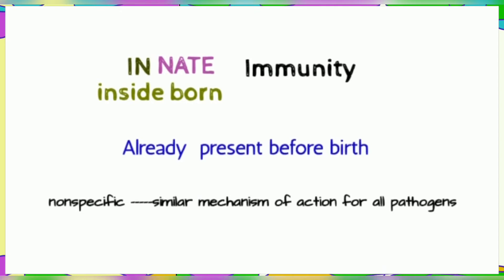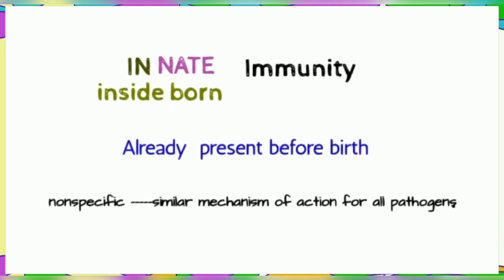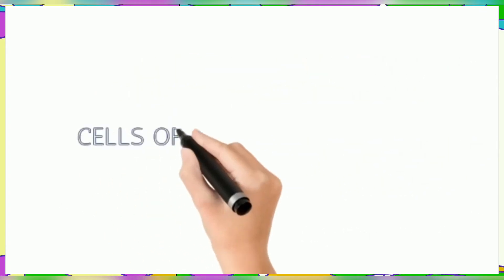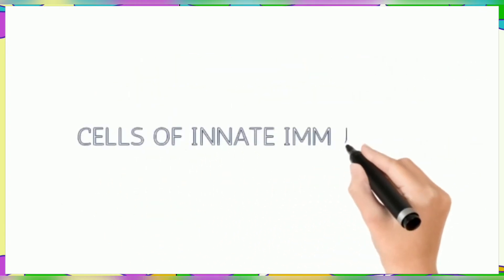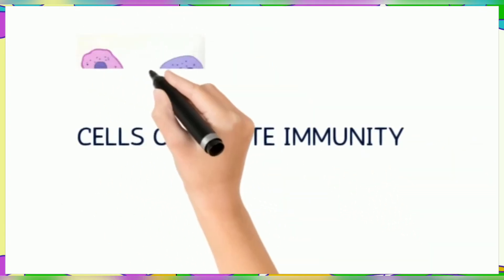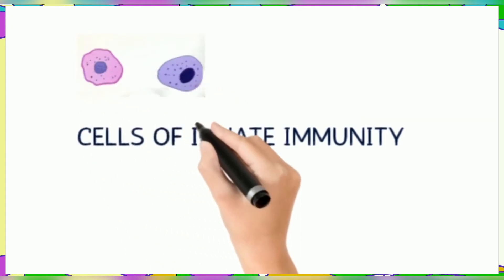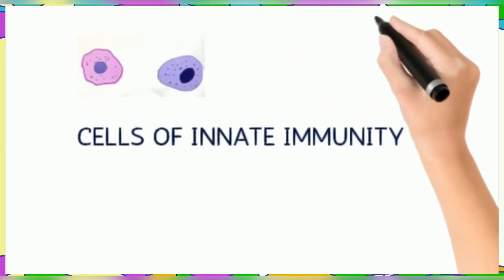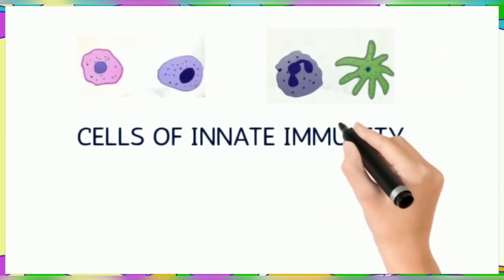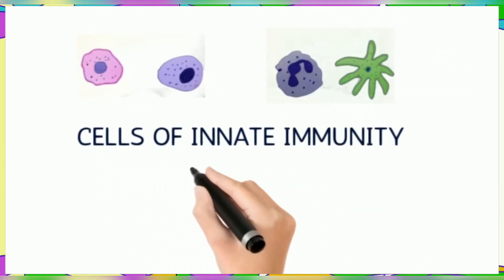The cells of innate immunity include: Neutrophils, Mast Cells, Basophils, Dendritic Cells, Monocytes, Macrophages, Eosinophils, and Natural Killer Cells — also called NK Cells. All of these cells are White Blood Cells, also known as WBCs or Leukocytes.